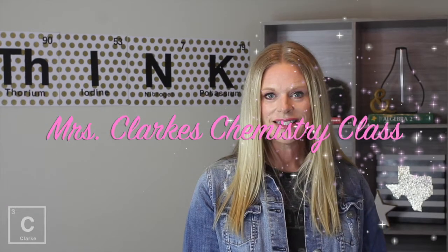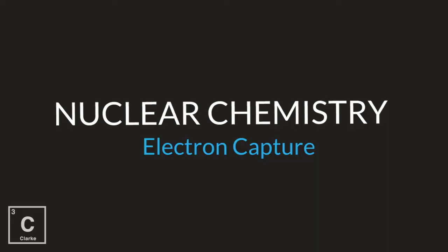Hey y'all, welcome to Ms. Clark's chemistry class. This is the fourth lesson in a series of lessons about nuclear chemistry. In previous lessons, we've talked about how to write out alpha decay and beta decay. In this lesson, we're going to talk about how to write out the reaction for electron capture. We're going to capture an electron and emit radiation. So go get your notes, go get something to write with, and let's get started.